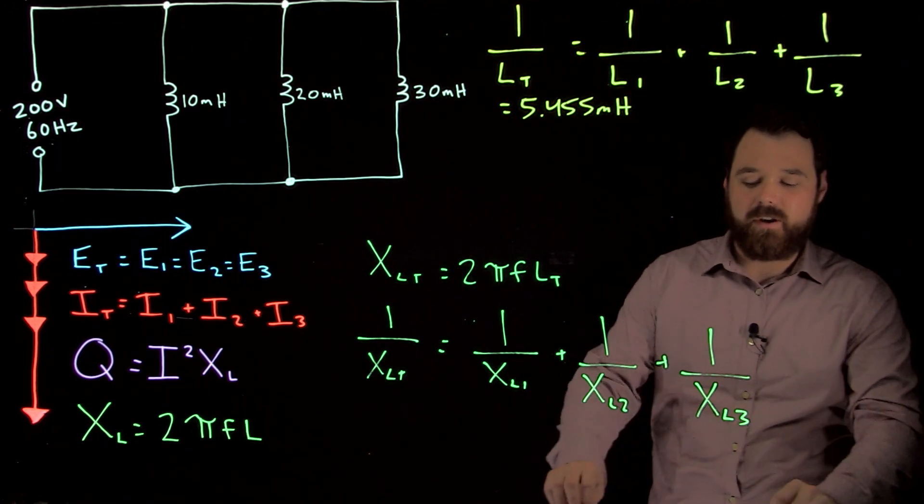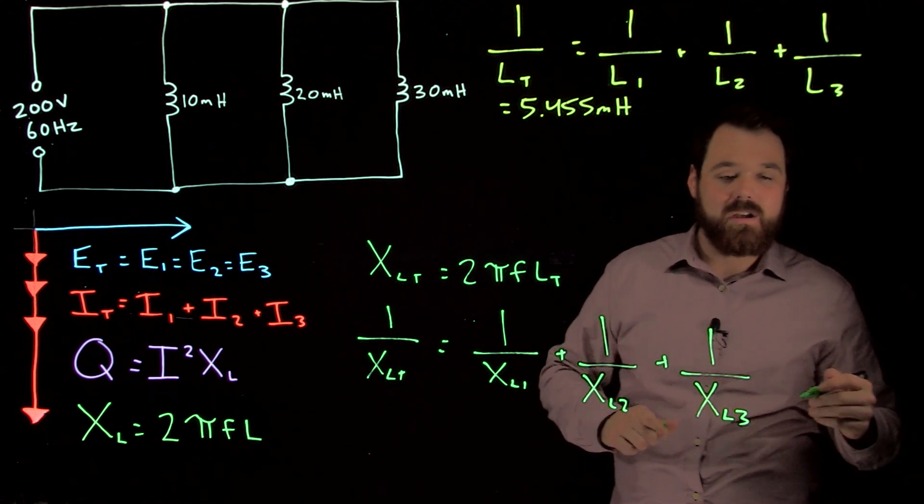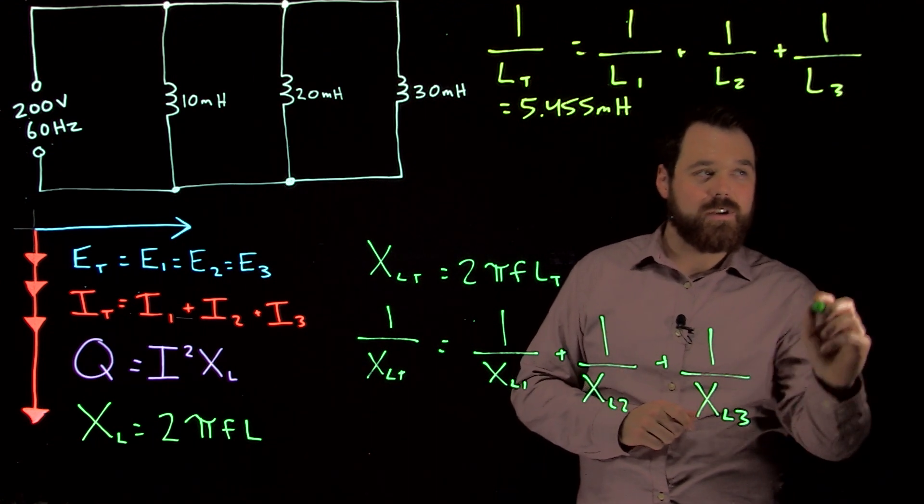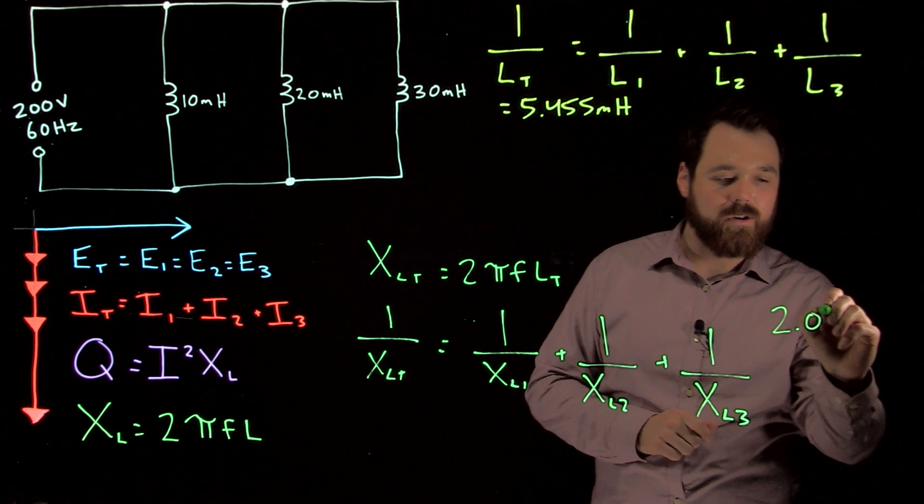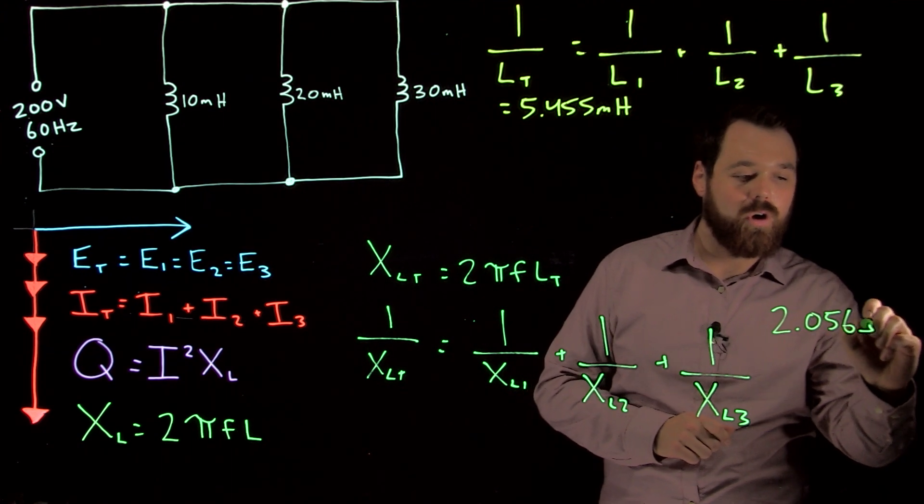We can take that and figure out our inductive reactance. And whichever way we do it, we should end up with 2.056 ohms.